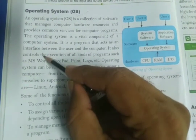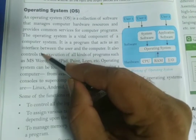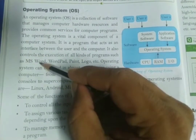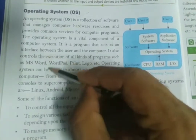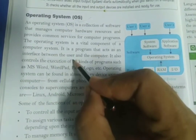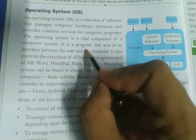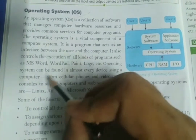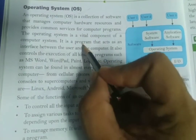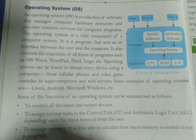The operating system takes instructions from the user and sends them to the hardware, and takes instructions from the hardware and sends them back to the user. So the operating system is a mediator program between the user and the hardware. It is also responsible for the execution of other programs. The operating system acts as a soul in a body — just as the soul is in the body, the soul of the computer is the operating system.